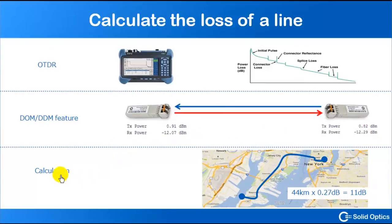A third way is to calculate, and this gives you a rough estimate. If you've got a line of 44 kilometers for example, you multiply that with 0.27 dB, which is on the safe side, you've got around 11 dB.